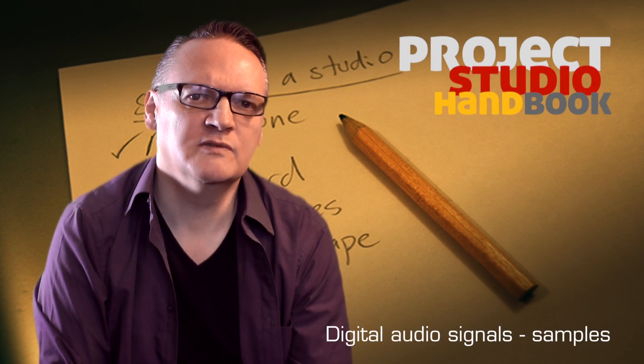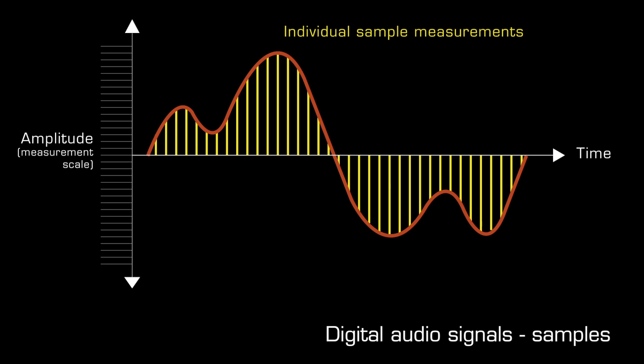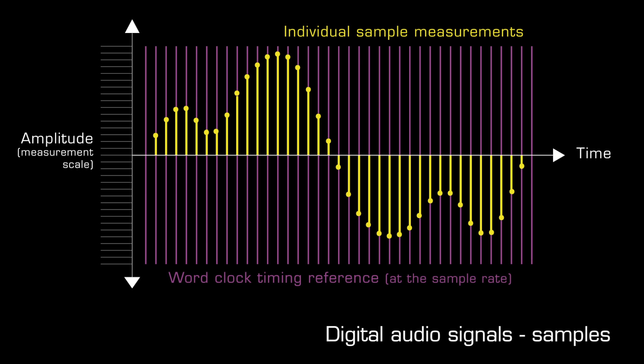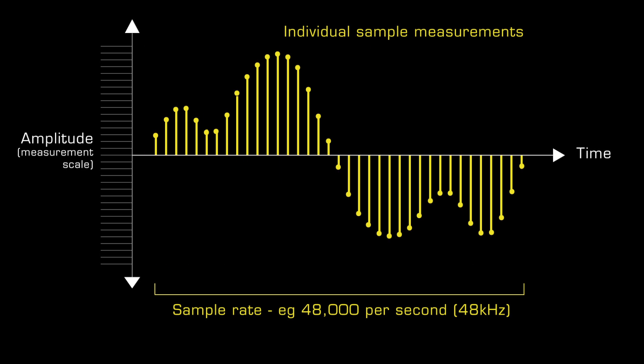Digital audio signals consist of long sequences of individually discrete measurements of amplitude called samples. These samples are taken at very precise intervals. They are like super precise join-the-dot pictures. The number of samples per second is expressed as the signal's sample rate or frequency. For example, there are 48,000 samples of amplitude per second in a 48 kHz digital audio signal.